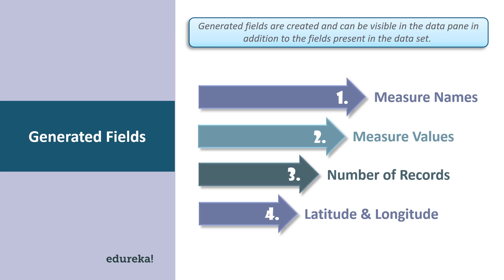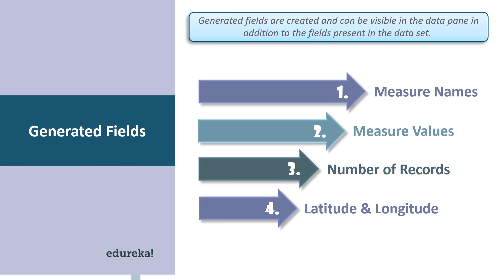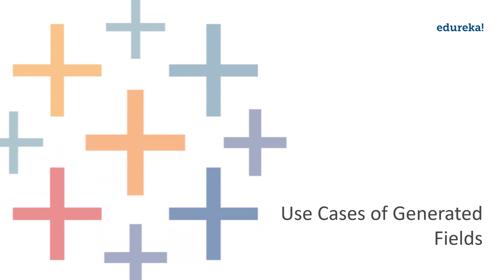The number of records can be used to verify the count of records when joining multiple tables as well. Apart from that, we have latitude and longitude, which are basically associated with geographical detail present in a data set. A data set should consist of geographical details like city, country, or state for this particular generated field to be used.